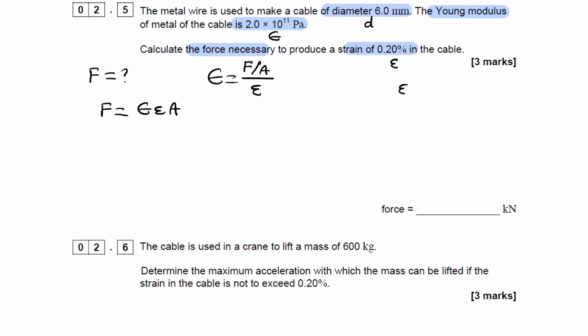The strain, we want to convert to decimal form, so divide by 100, we get 0.002. And the diameter, we want to convert to meters, so that will be 0.006. Cross-sectional area is pi d over 2 squared. So put all of this in, Young modulus, strain, diameter into this equation, and we get 11310, so 11.3 kilonewtons.